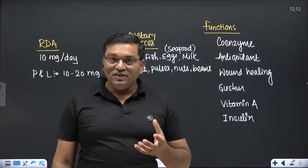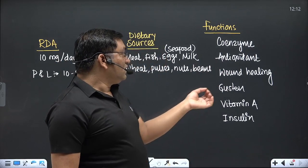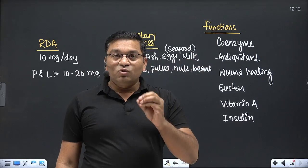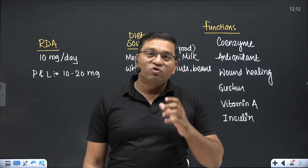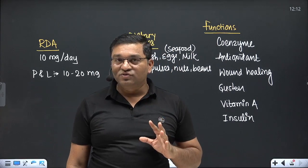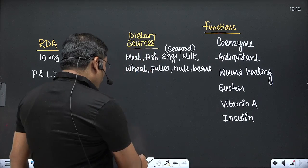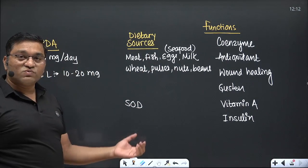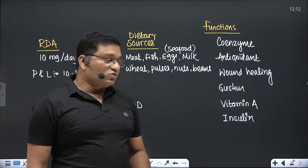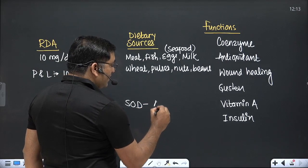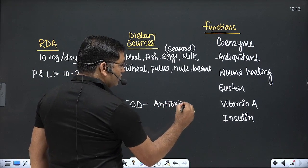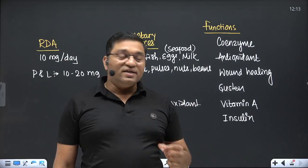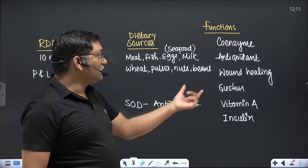Zinc is a metallo-component — a prosthetic group or cofactor — for more than 300 enzymes in our body. An important one is cytosolic superoxide dismutase, which is an important antioxidant and free radical scavenging enzyme. Because of superoxide dismutase, zinc has antioxidant properties.